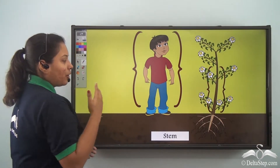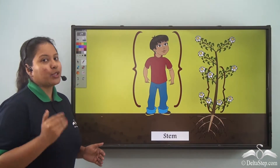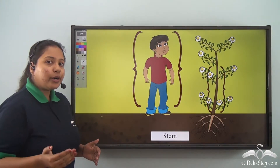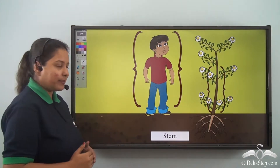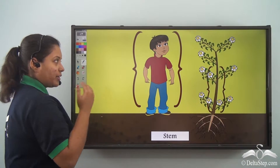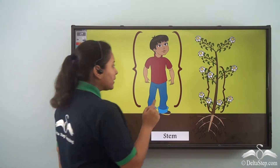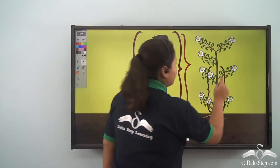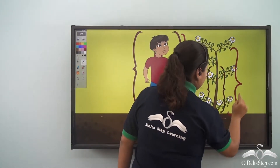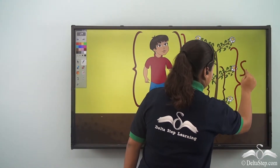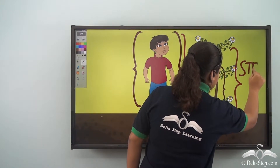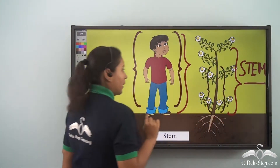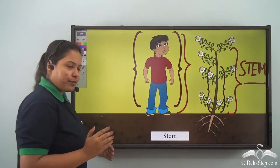Now here is the second part. "My body is known as stem. It may be strong like iron or soft like wool." Just like we have a body, the plant's body is known as the stem — and for some plants it is hard whereas for some plants it is soft.